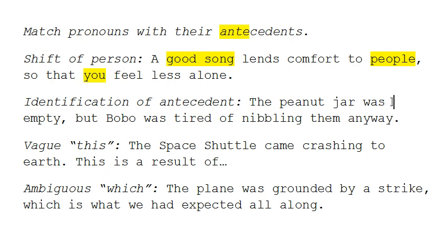The next problem that people have is confusion about what the antecedent is. This often happens — we'll start off a sentence and then in the second part of the sentence, we'll forget what we're referring to. For example: 'The peanut jar was empty, but Bobo was tired of nibbling them away.' Here's the pronoun — what is it referring to?